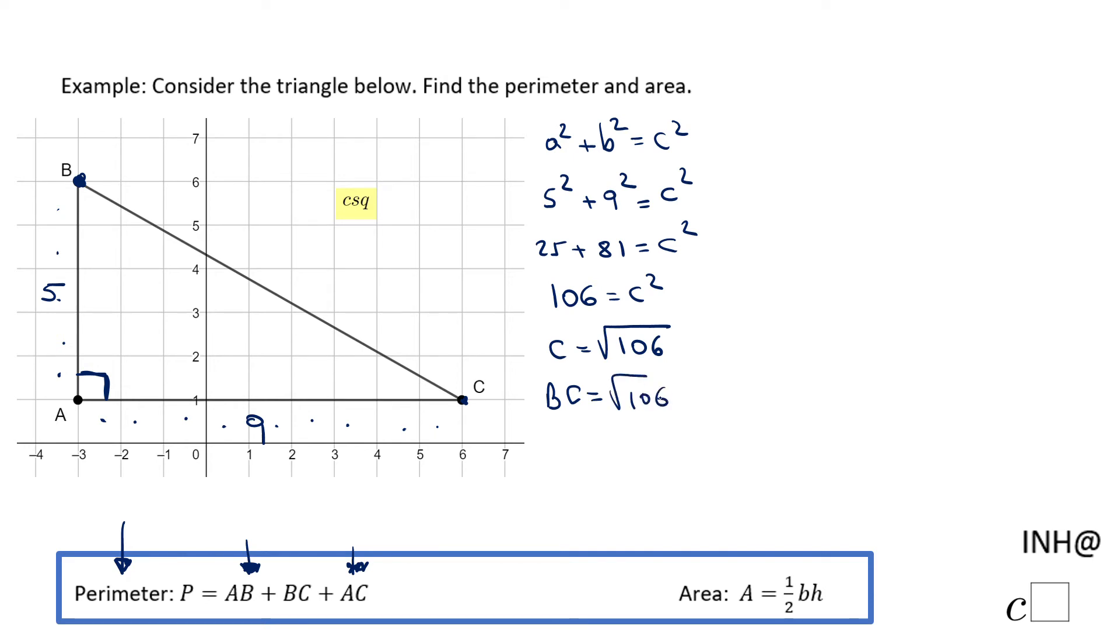So now we can move and find the perimeter of this shape. The letter P, as I said here down on the bottom, will be AB which is 5, plus BC which is square root of 106, and AC which is 9. The only thing we can do here is to combine 5 and 9 because they are alike, and 5 plus 9 is 14 plus square root of 106. That is the perimeter of this shape.